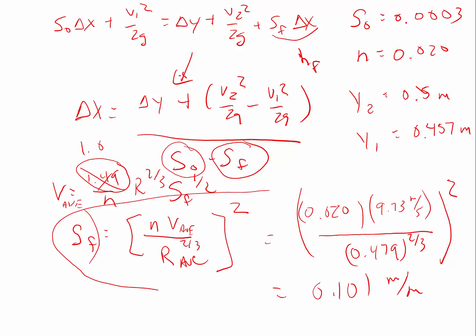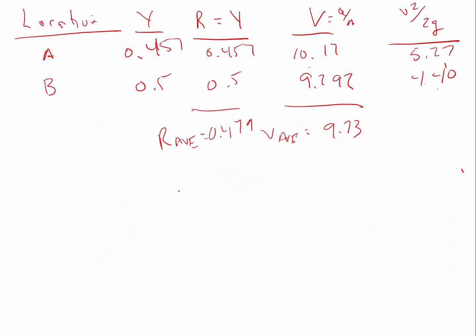I'm going to transfer this equation right here to the next page. So now I've got delta x equals delta y, put that delta y where you can tell it's a delta y there, plus v2 squared over 2g minus v1 squared over 2g divided by s sub o minus s sub f. So if I start populating things there.